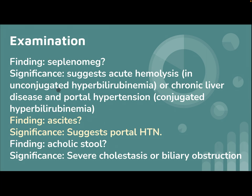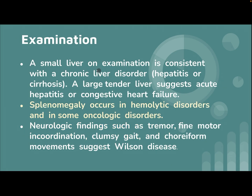Splenomegaly suggests acute hemolysis in unconjugated hyperbilirubinemia, or chronic liver disease and portal hypertension in conjugated hyperbilirubinemia. Ascites suggests portal hypertension. Acholic stools are significant for severe cholestasis or biliary obstruction. A small liver on examination is consistent with chronic liver disorder, hepatitis, or cirrhosis. A large, tender liver suggests acute hepatitis or congestive heart failure.